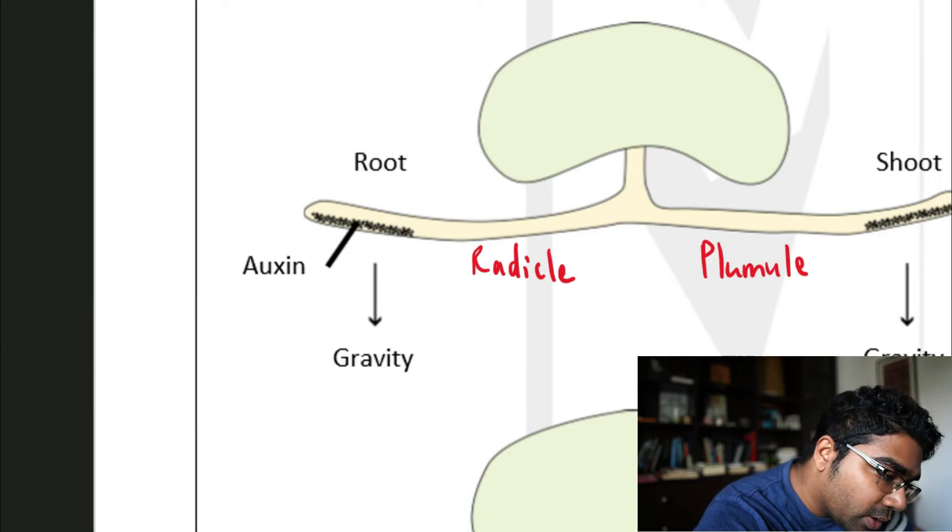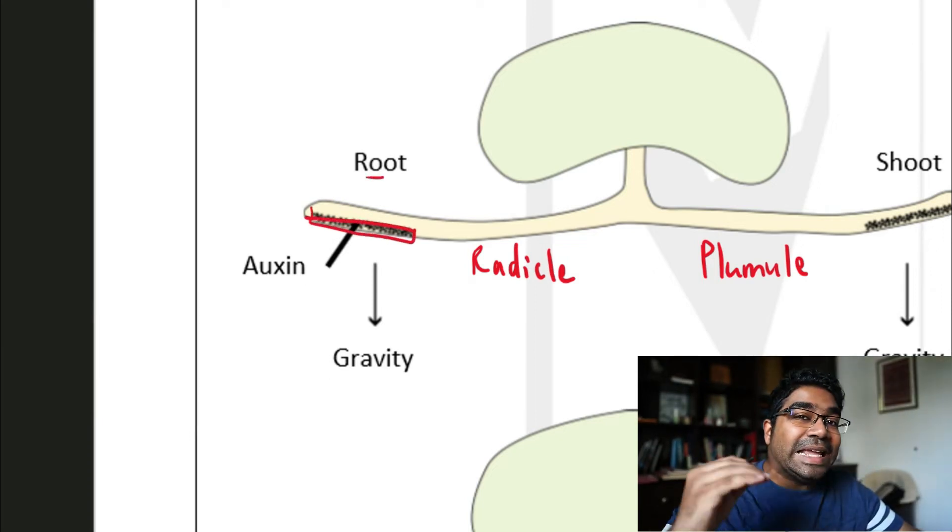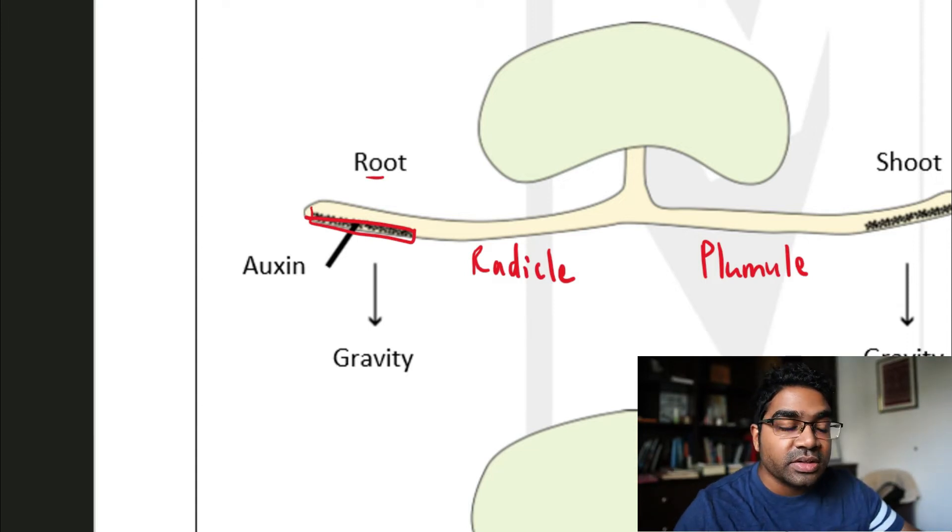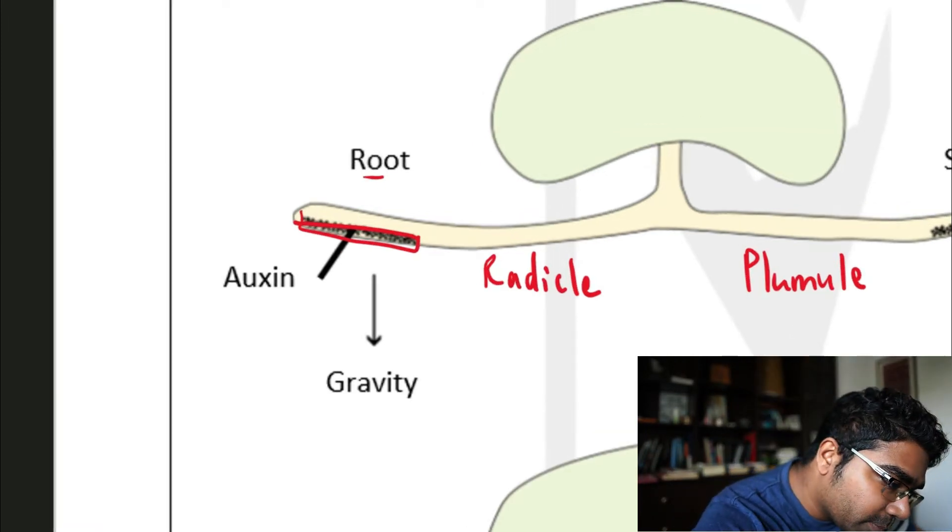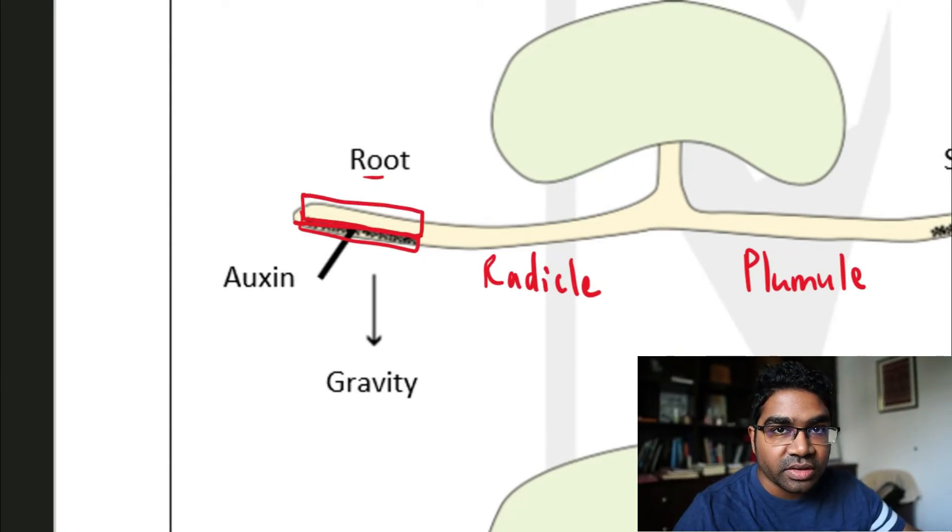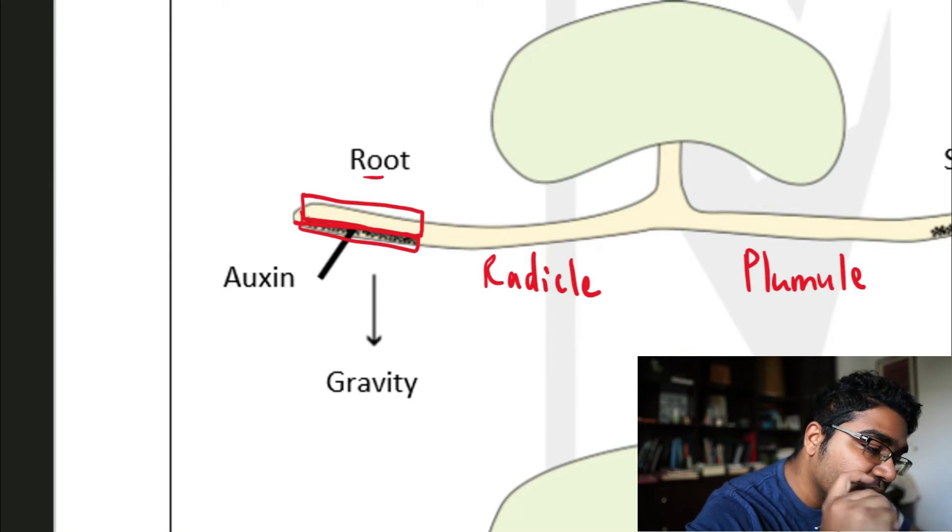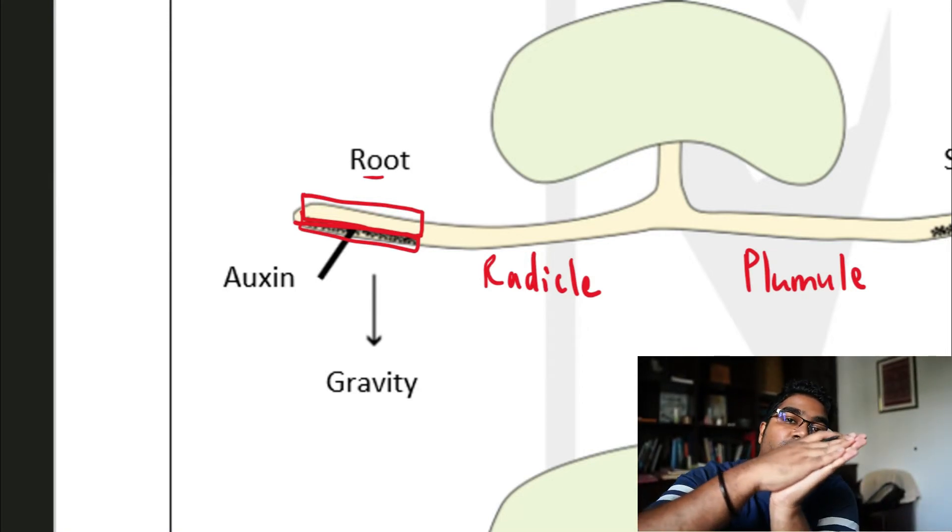Here, auxin is gathered at the bottom, so in the bottom part of the root—since auxin inhibits cell elongation in the root—what will happen is the top part of the root will have a higher rate of cell elongation. Cell elongation will occur faster here, so the top will grow faster than the bottom.